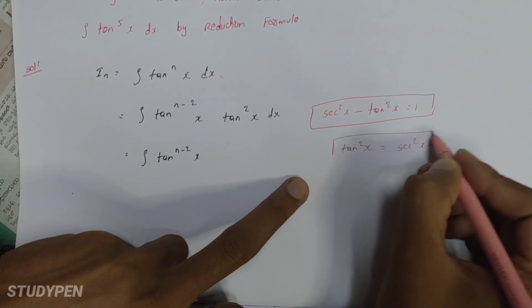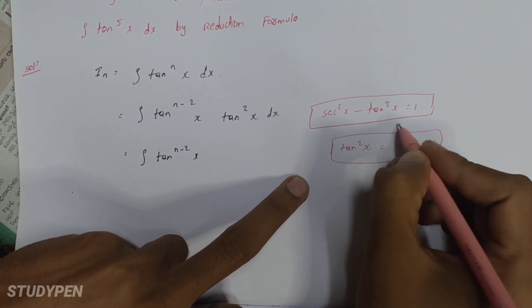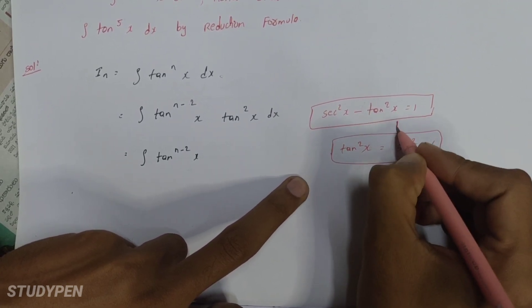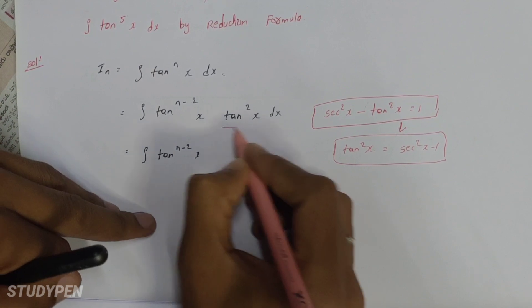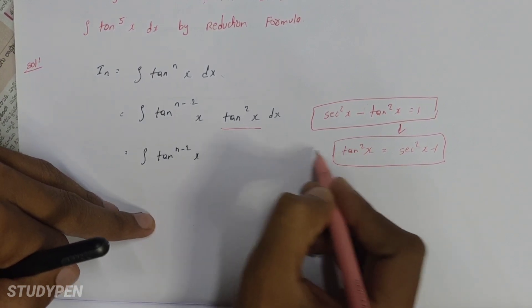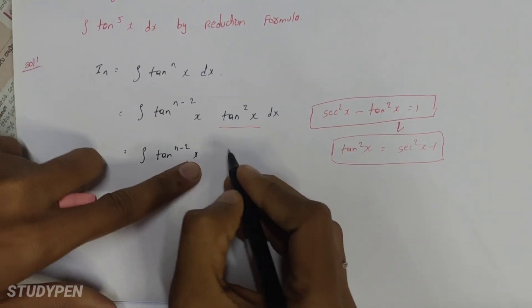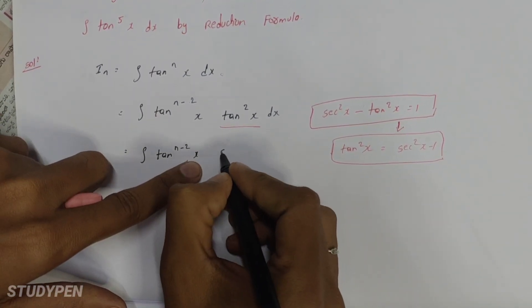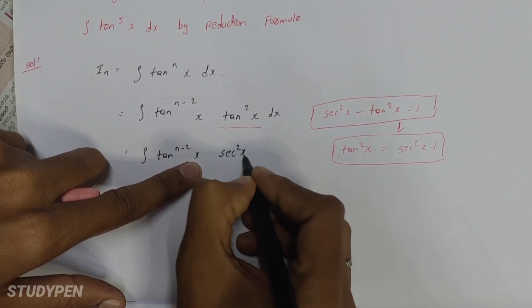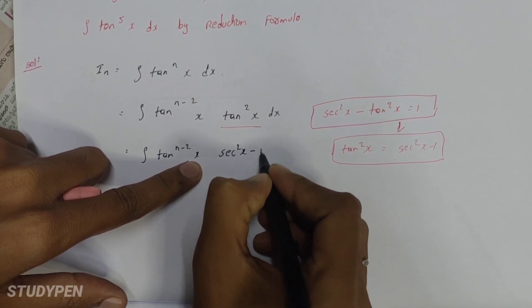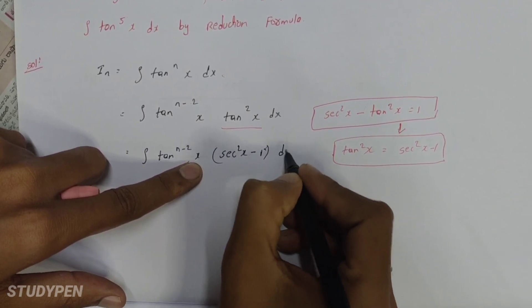So here we can write this way: tan square x. So in this place, we can write sec square x minus 1 dx.